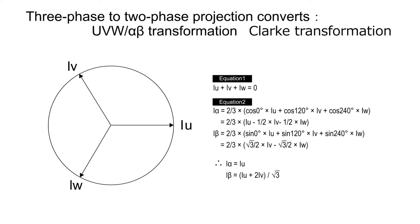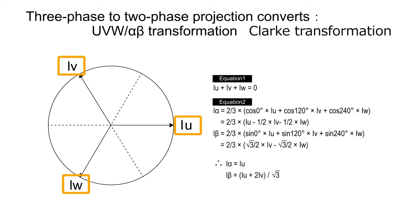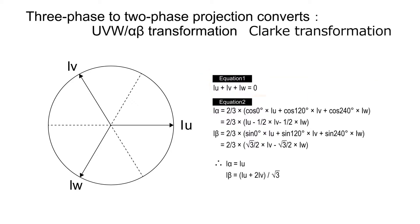In this transformation, the property of an ideal three-phase alternating current is utilized, which is that the sum of three sine waves is zero. The relationship among IU, IV, and IW is represented by equation 1.